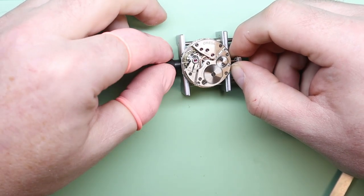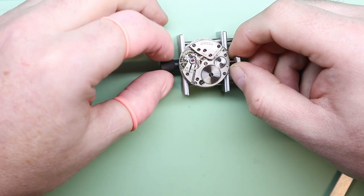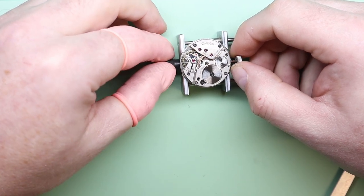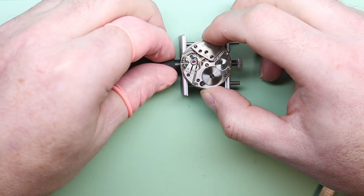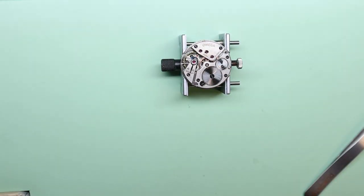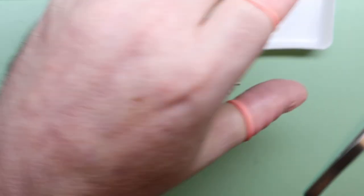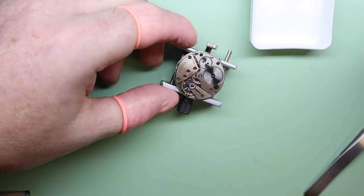Not sure if you can get them anymore, but there might be some on eBay. Really good tool. I'm going to secure the movement in the adjustable movement holder. We've already powered down the movement, so one of the first things we're going to do is remove the balance. The balance is held on by a single screw.